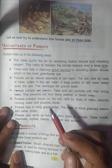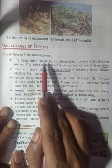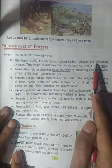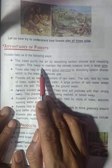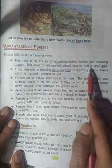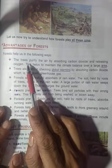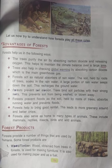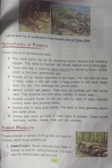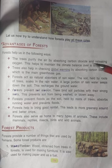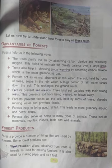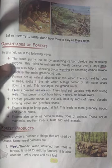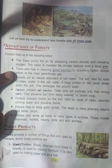Forests help lessen the flowing waste. Trees purify the air by absorbing carbon dioxide and releasing oxygen. This helps to maintain the climate balance over a large area. They absorb carbon dioxide because they use it in the process of photosynthesis. This is the process by which plants make their own food, and in this process they release oxygen.